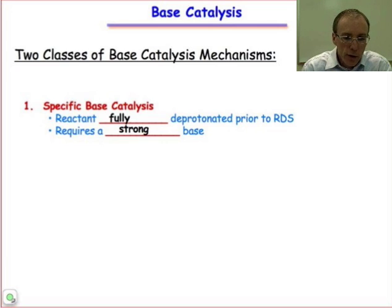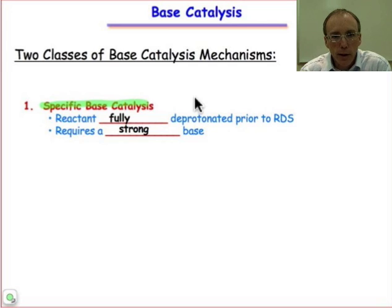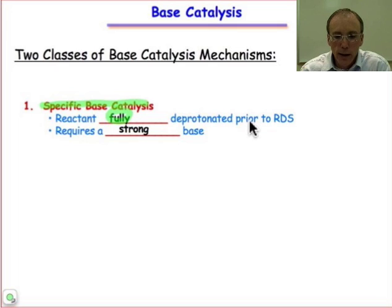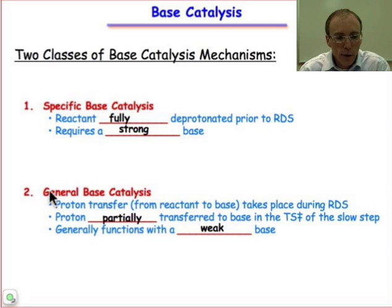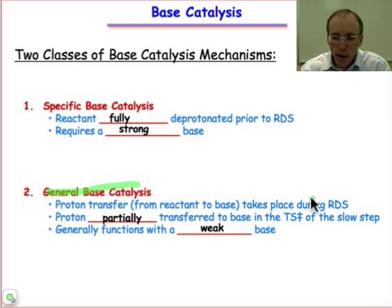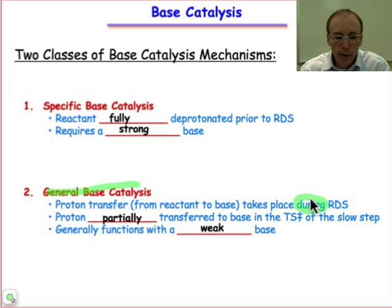Not too surprisingly, specific base-catalyzed mechanisms involve a full deprotonation, and the key word is prior — prior to the rate-determining step. This is going to require a strong base. In contrast, general base-catalyzed mechanisms operate by deprotonation taking place during the rate-determining step, and this could be accomplished with a weak base.